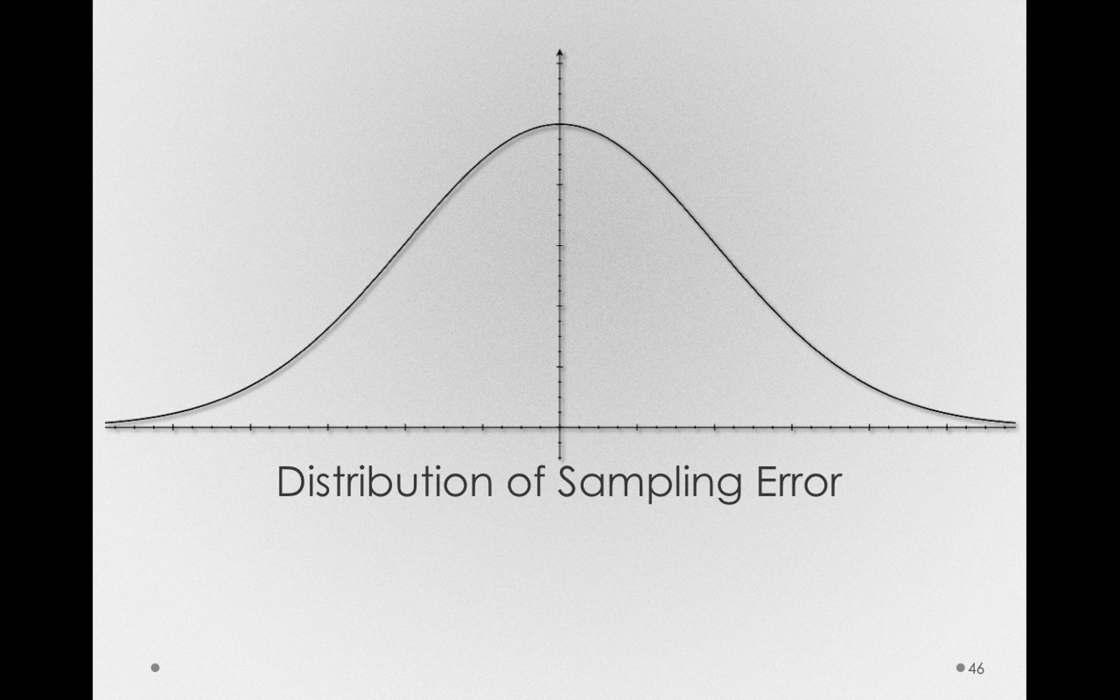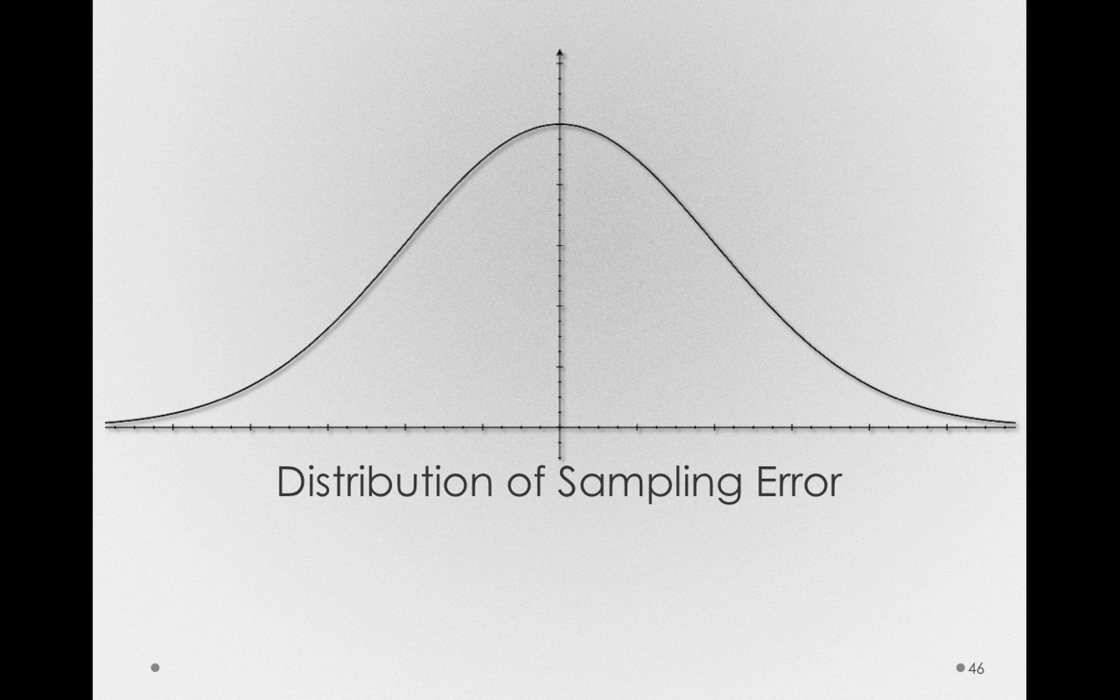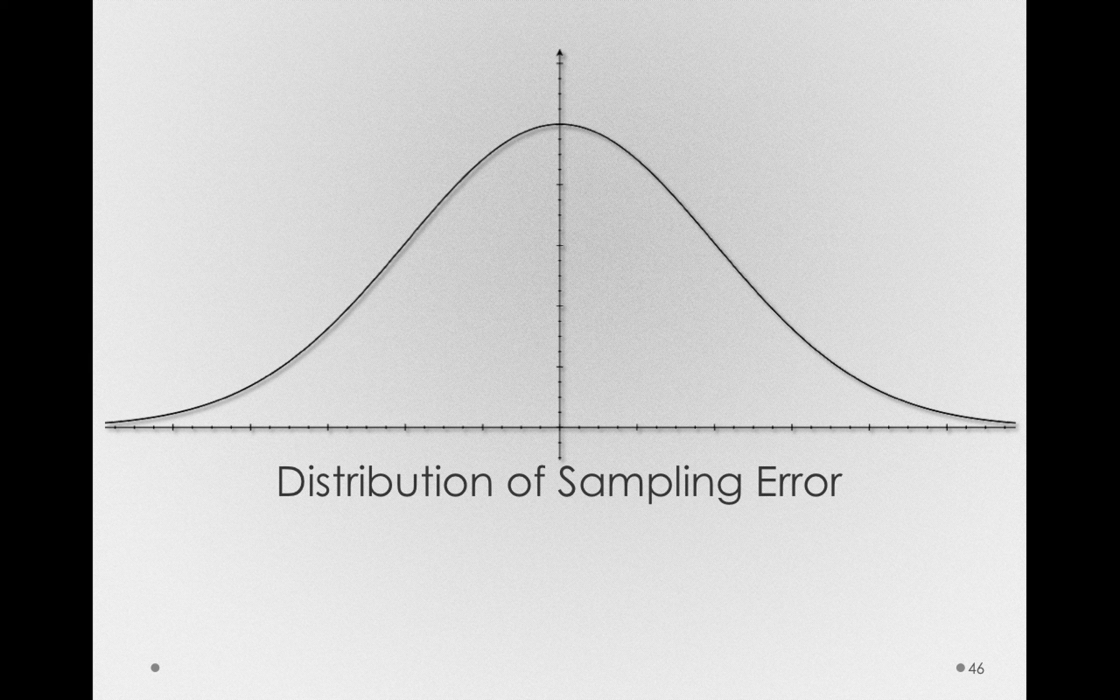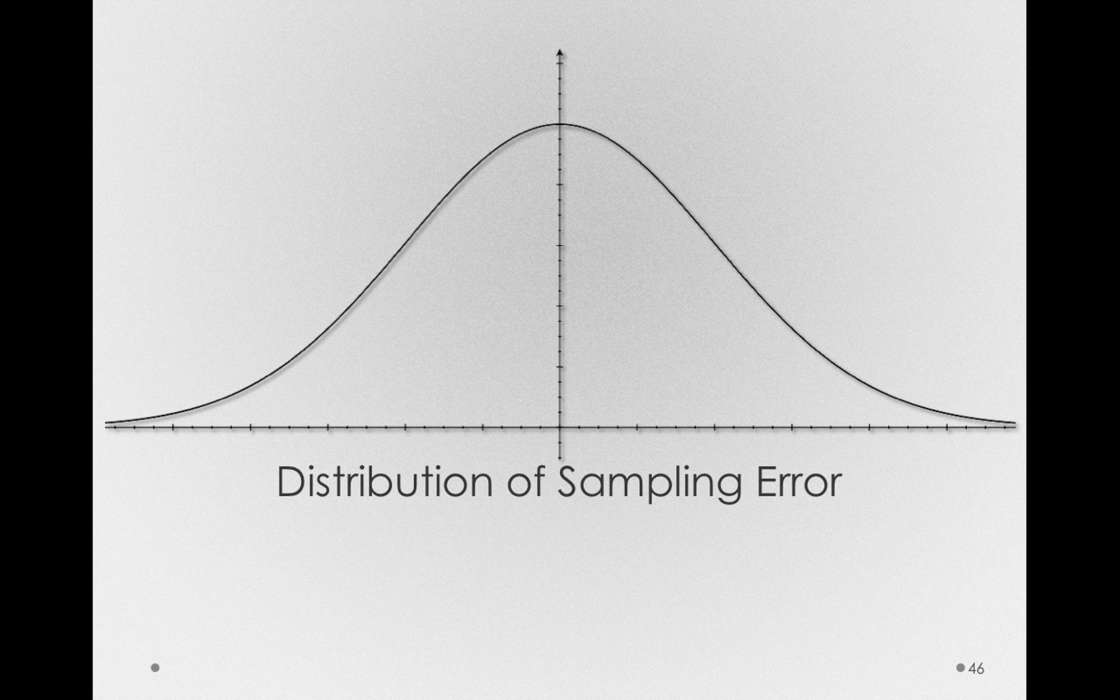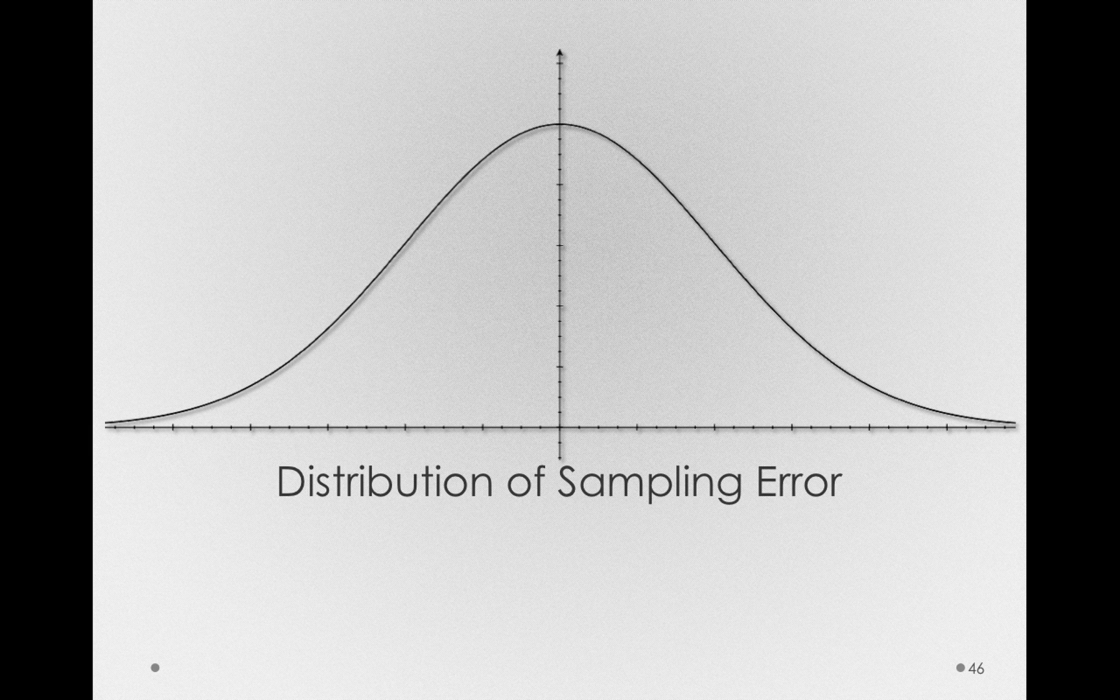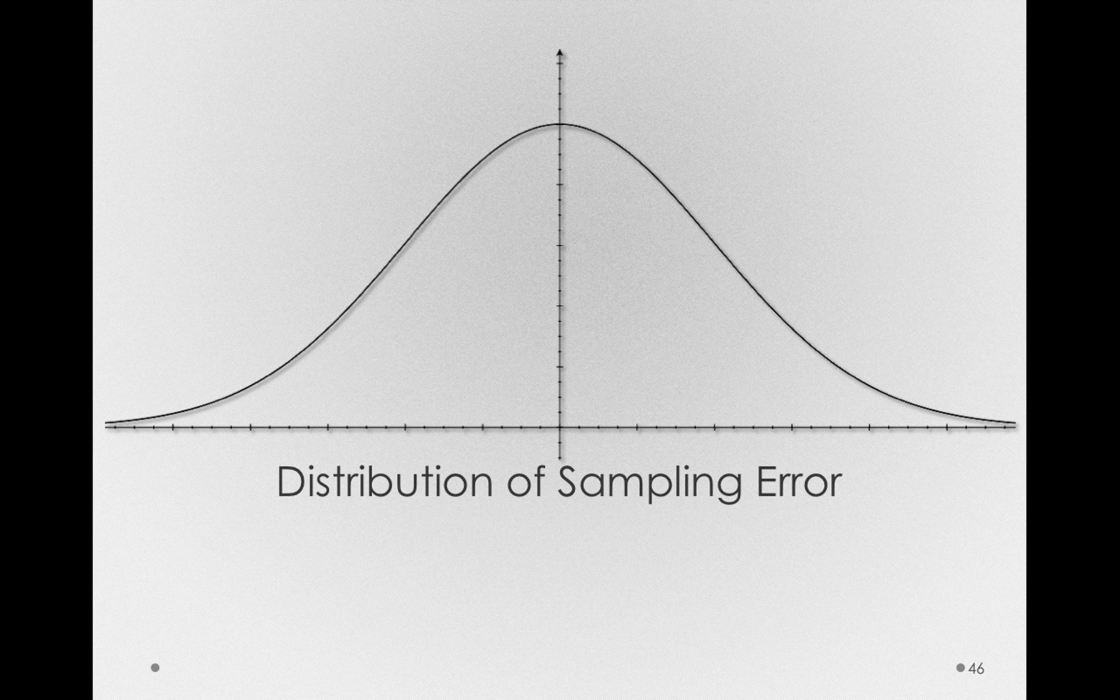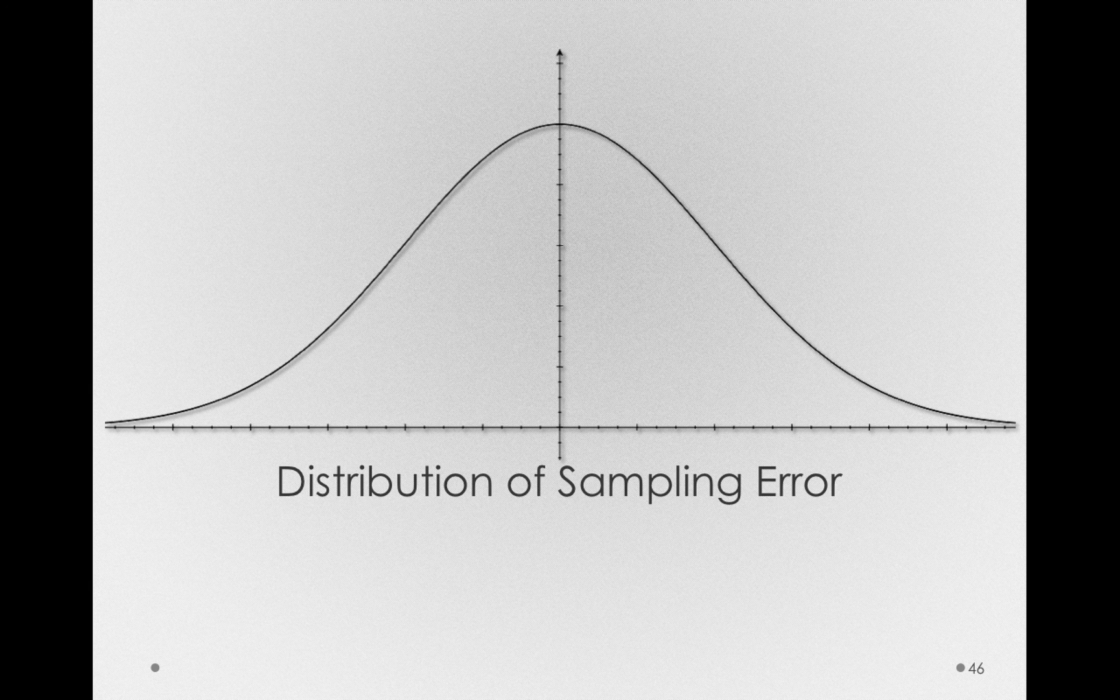Remember, sampling error is the error that exists between our sample statistics and our population parameters. And again, under a wide range of conditions, sampling error will be normally distributed. Because we know a lot about the normal distribution, we're going to be able to quantify and predict how much sampling error we should expect to get, which is going to give us the key to making inferences about populations from samples.